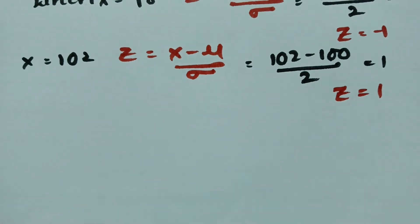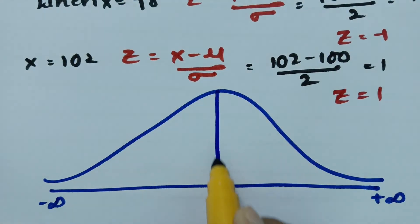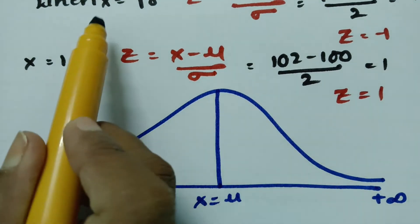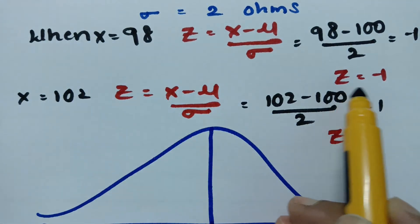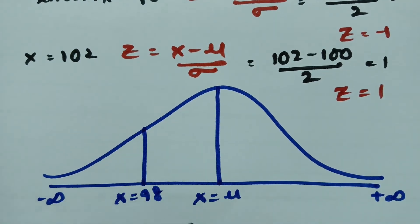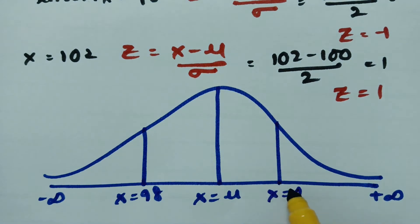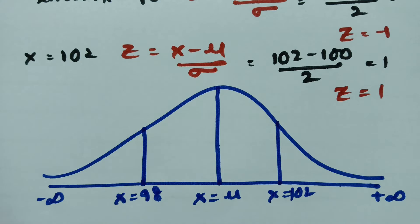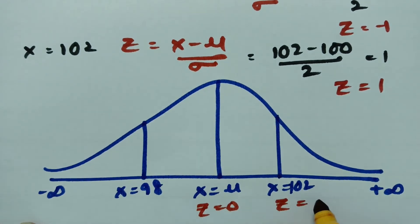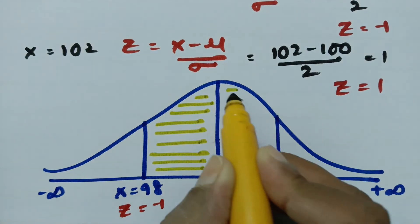Drawing the normal curve: it extends to plus infinity on the right and minus infinity on the left, with the center at x = μ. When x = 98 we have z = −1, and when x = 102 we have z = +1. The center is z = 0. We need the area between z = −1 and z = +1, which is the required region.